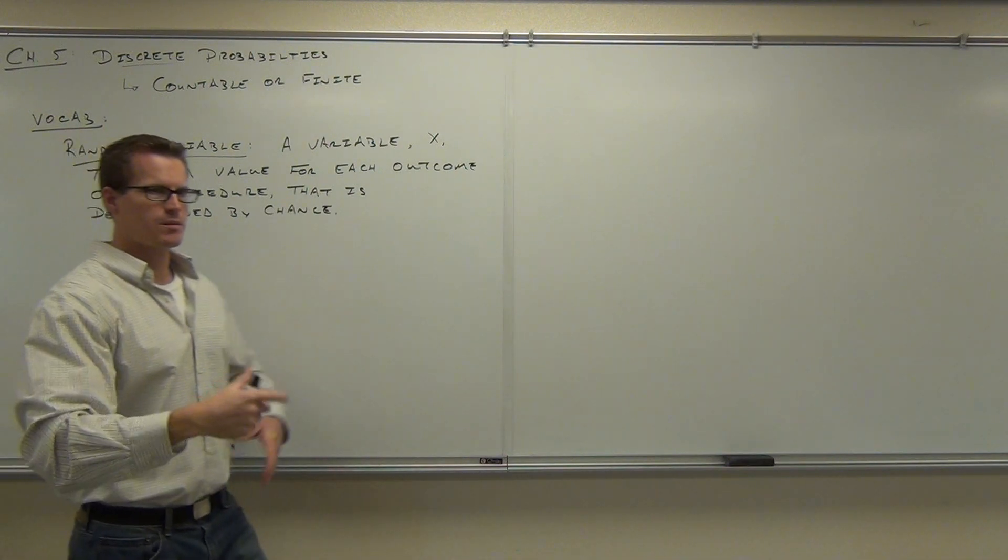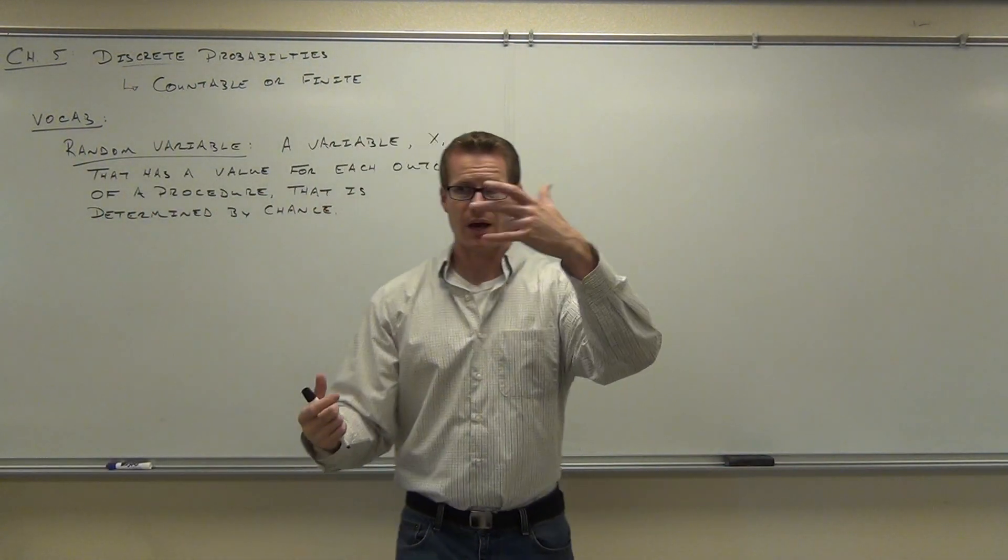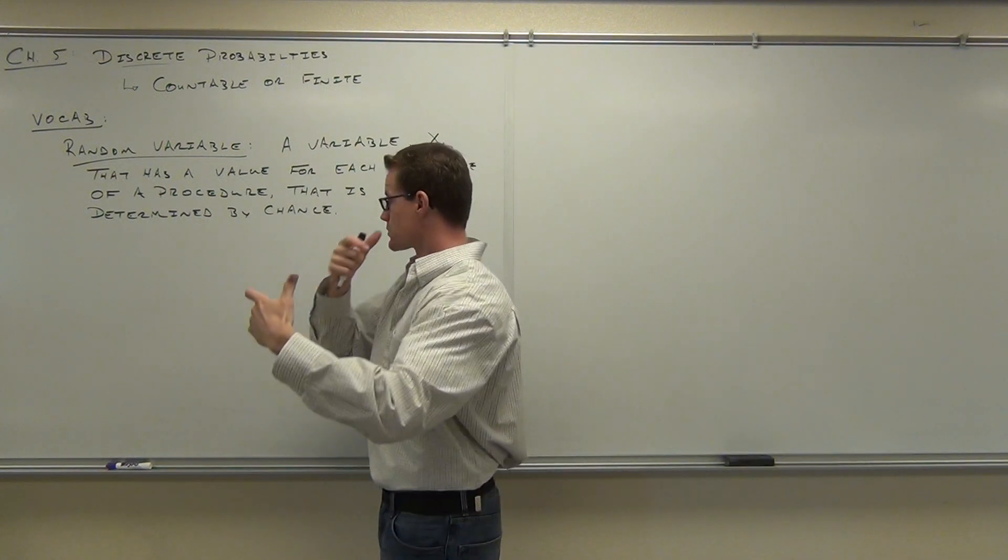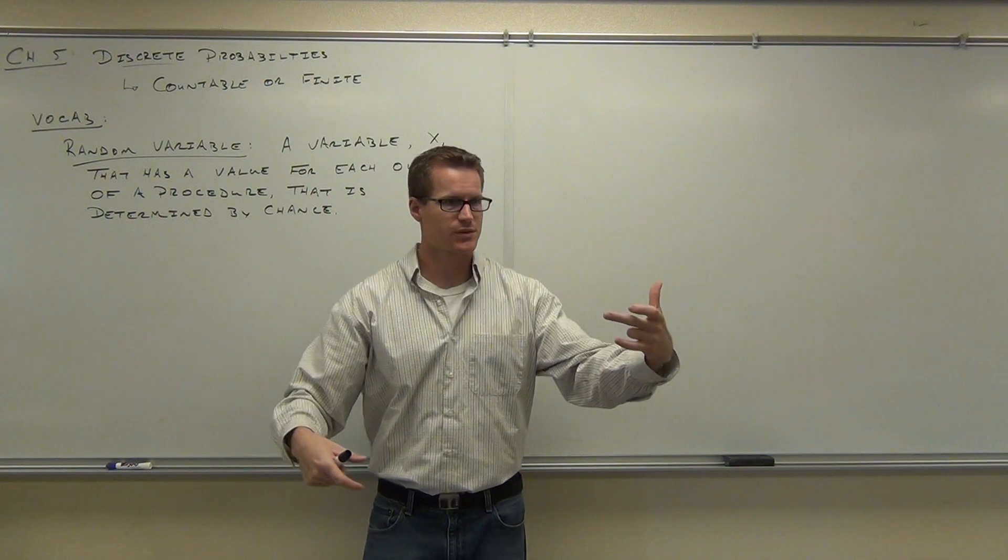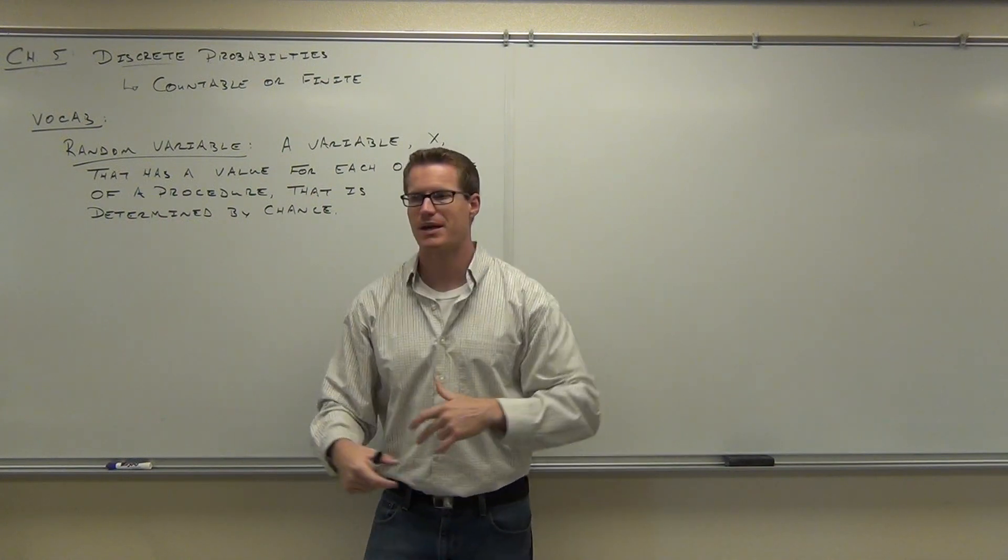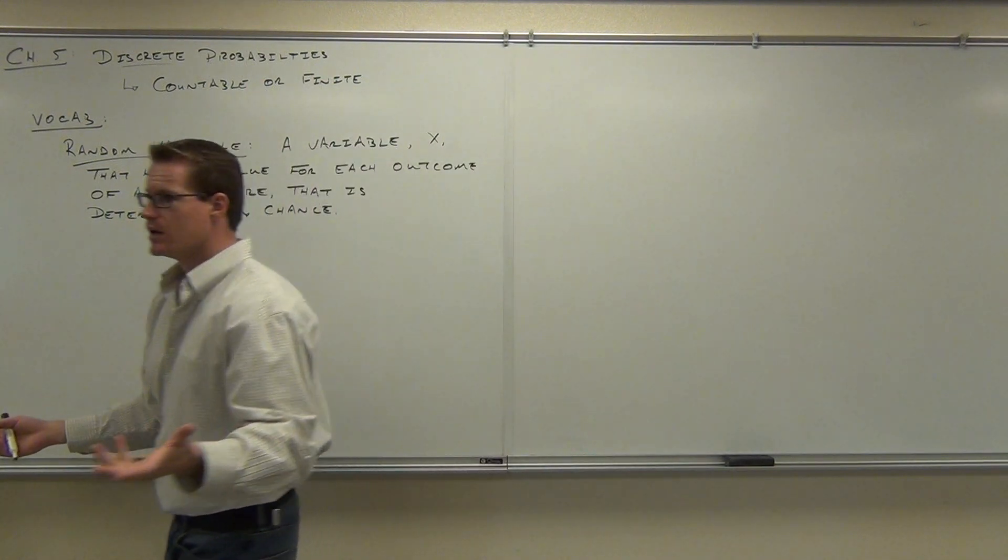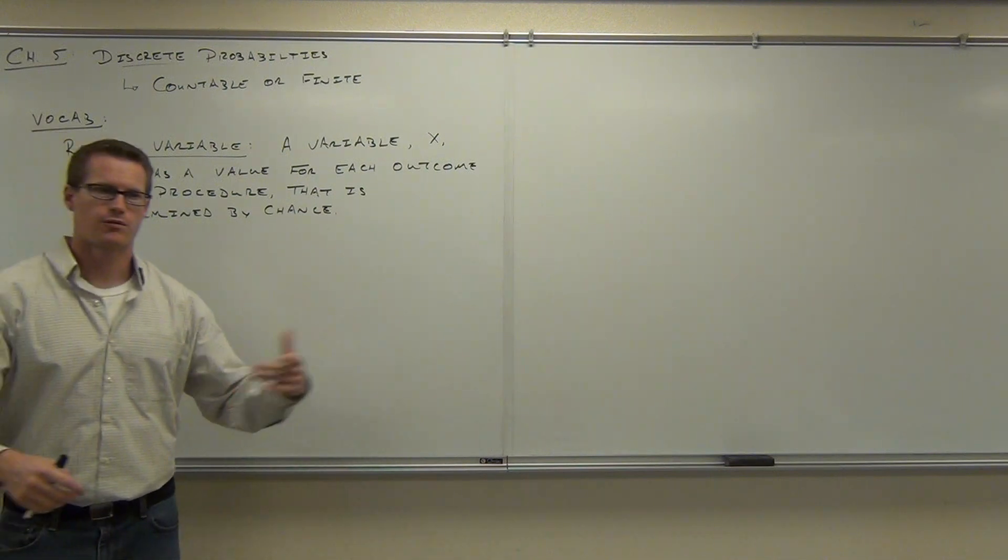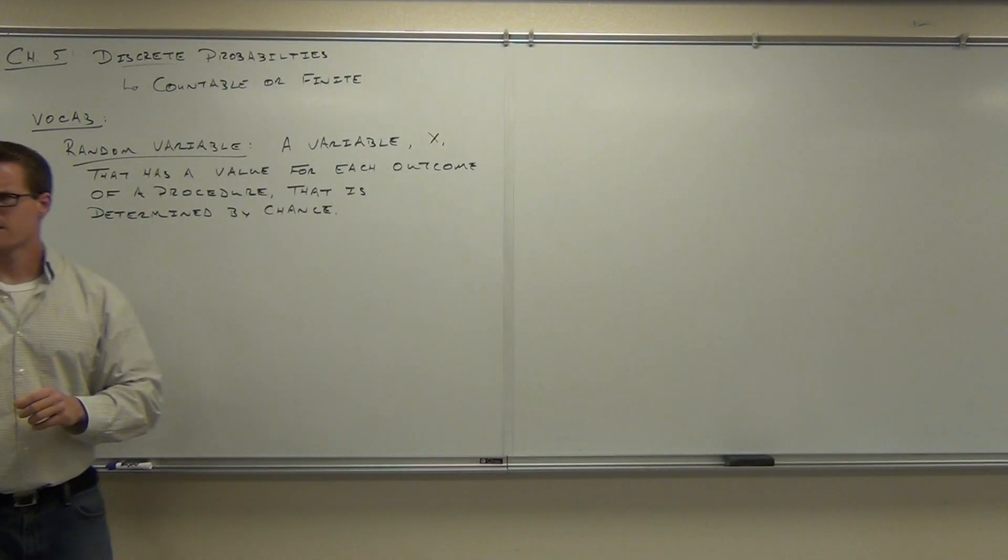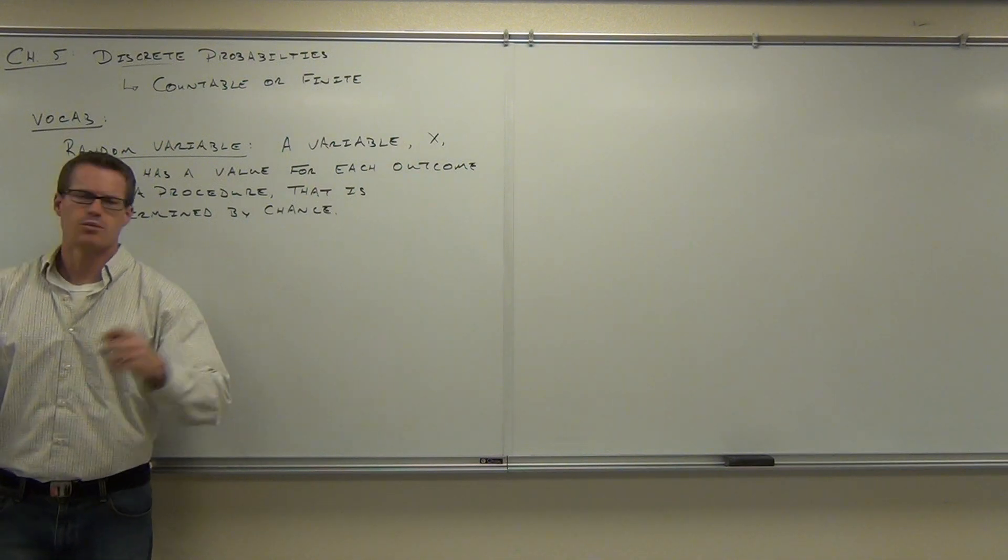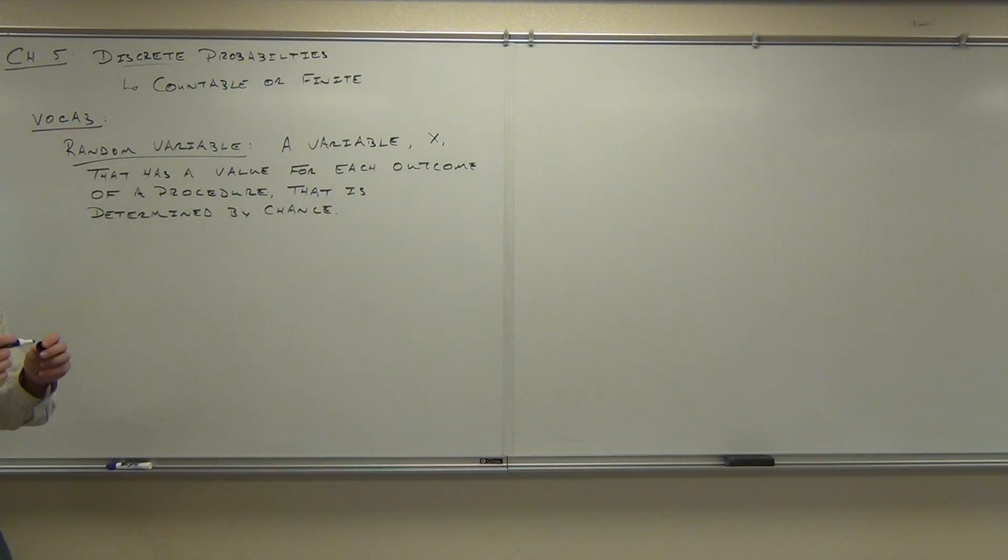So random variable, random means by chance, variable means the outcomes that are changeable. Variable, such as rolling a die, we would have a certain number of outcomes. The variable would take the place of those outcomes. And the outcome that you get is dependent on the chance of you rolling that die. So the probability of rolling a 3 or a 4 or 5 or 6 or 1 or a 2. So that's a random variable. Are you guys understanding the idea of a random variable? And we'll talk more about some examples of random variables in just a little while.